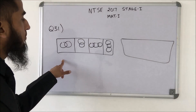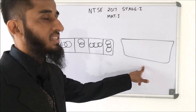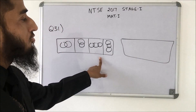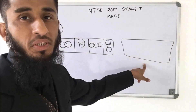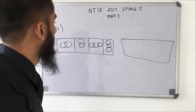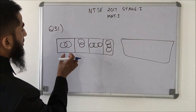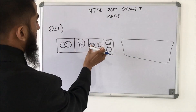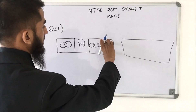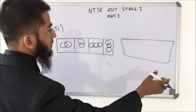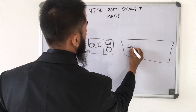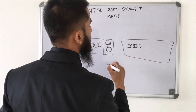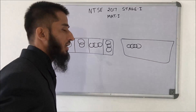In this question we have a problem figure and an answer figure. In the problem figure there is a sequence: 2 circles horizontal, then 2 vertical; 3 horizontal, then 3 vertical. So in the next step of the sequence, we should have 4 horizontal circles. The option showing 4 horizontal circles is the correct answer.